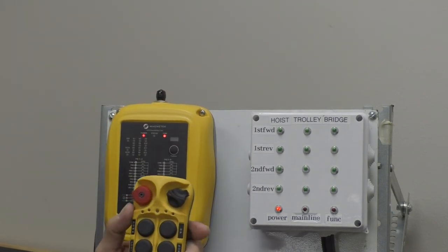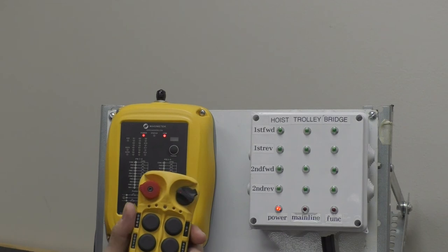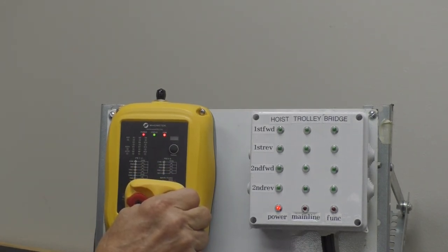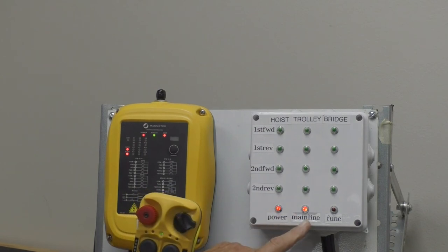So let's check it out. If I push the red button up, turn the black button to on, my main line comes on.